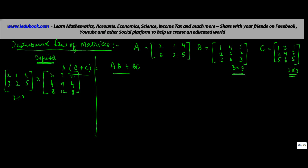B plus C is of order 3 by 3, and A is 2 by 3. The number of columns in A equal the number of rows in B plus C, so multiplication is possible. The resulting matrix will have 2 rows and 3 columns. Let's multiply them right away.